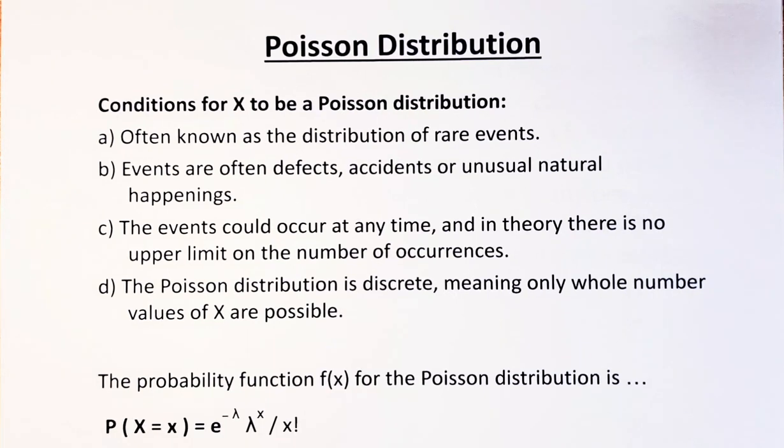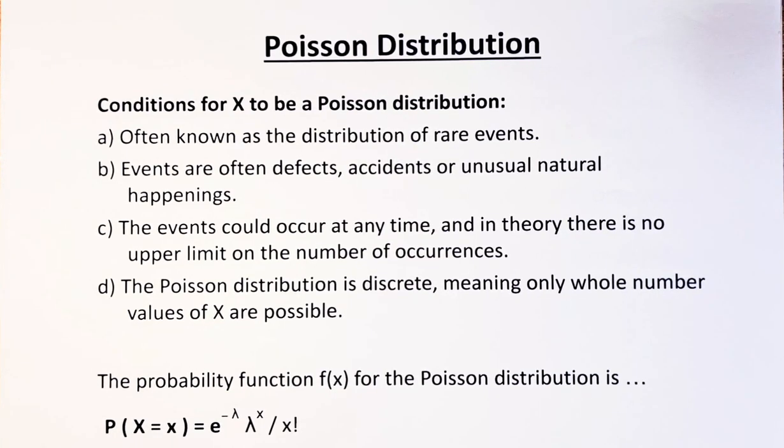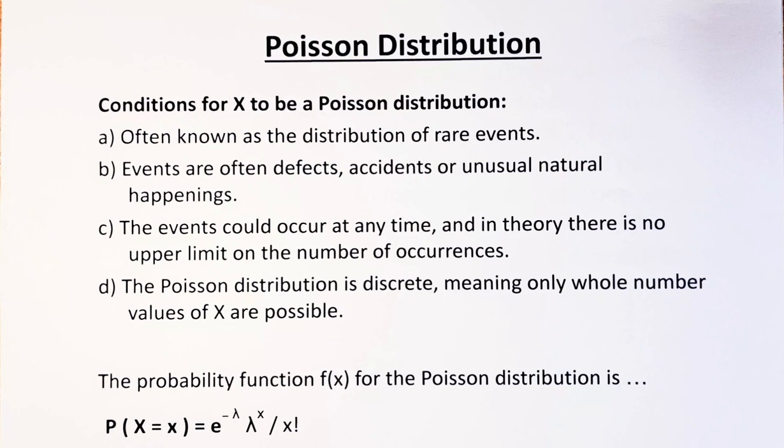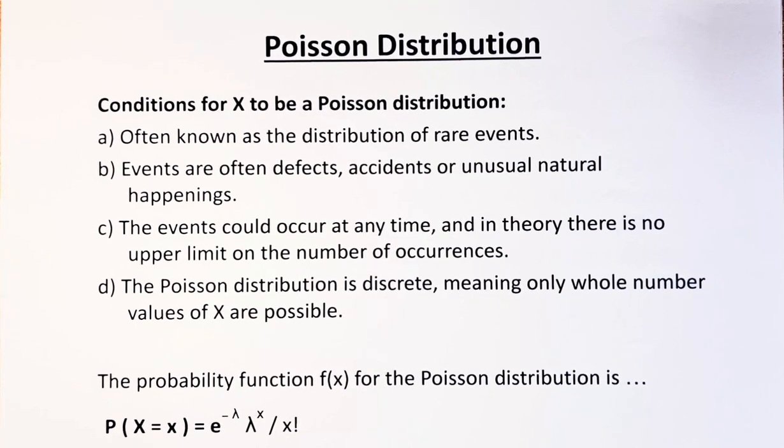Often called the distribution of rare events, they are events that are often defects, accidents, or unusual natural happenings like cyclones, flooding, earthquakes.